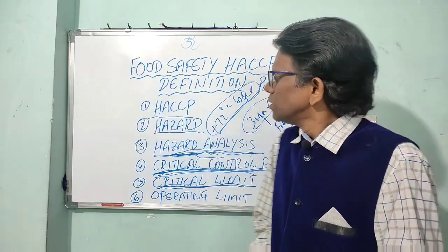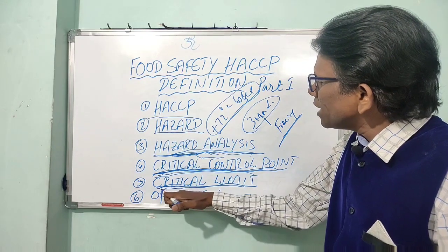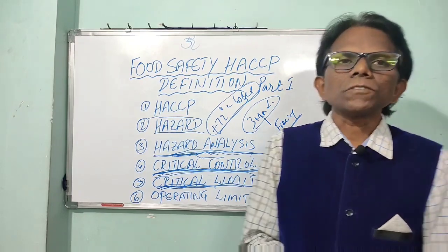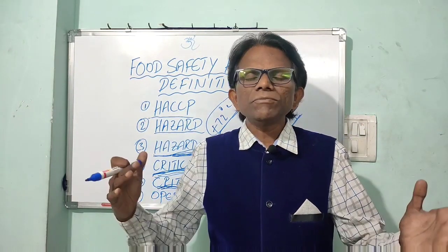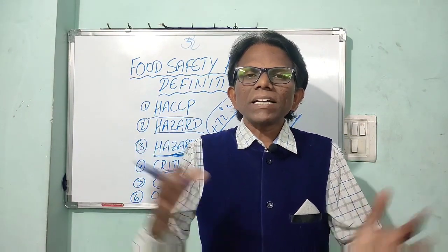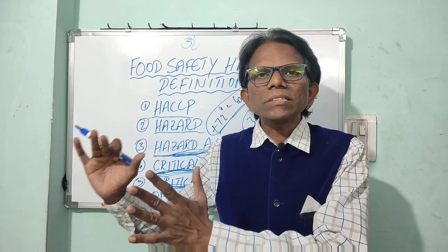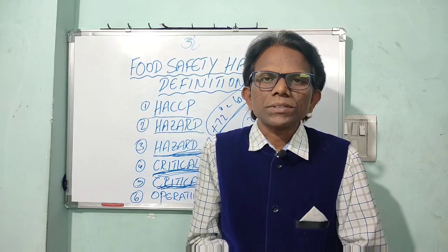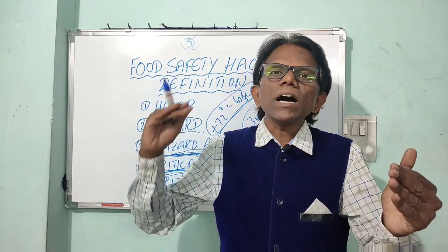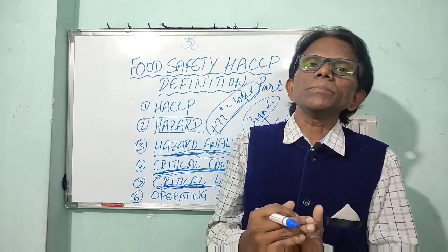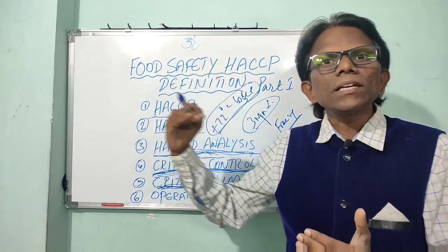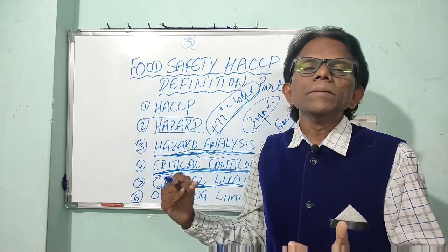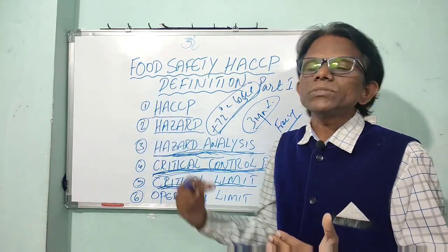For metal detection, the critical limit is 3mm. If no detectable metal fragments are present, the product passes. If a metal piece above 3mm is detected, the product is detained. In this way, the maximum or minimum value at which the CCP hazards — biological, chemical, or physical — can be prevented, minimized, or eliminated to an acceptable level is the critical limit.